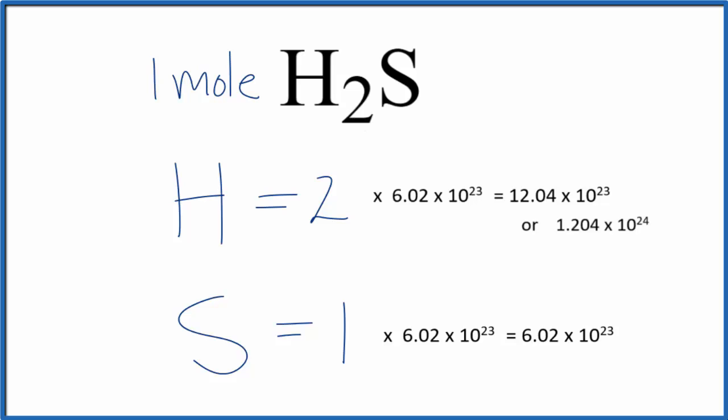If you wanted to know the total number of atoms in one mole of H2S, then you would just multiply three times Avogadro's number. This is Dr. B looking at the number of atoms in hydrogen sulfide. Thanks for watching.